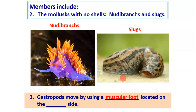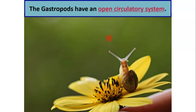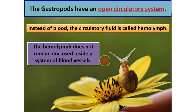Gastropods move by using their muscular foot. You can see in the nudibranch and slug that the whole ventral surface is its foot, located on the ventral side. Gastropods have an open circulatory system, which is different from the annelids we just studied — those had a closed circulatory system. In a closed system, blood is totally enclosed in veins and arteries. In an open system, blood goes into a big open cavity where oxygen and nutrients diffuse from it.